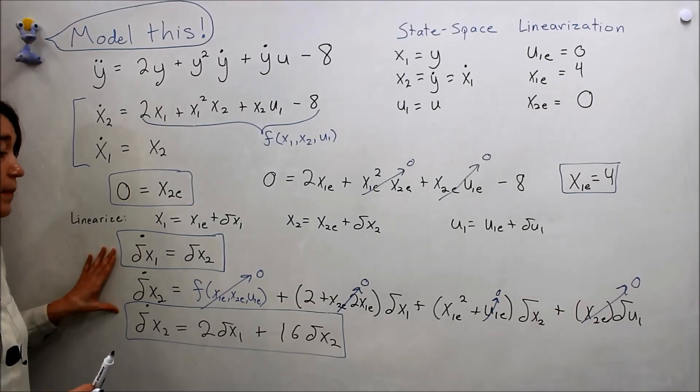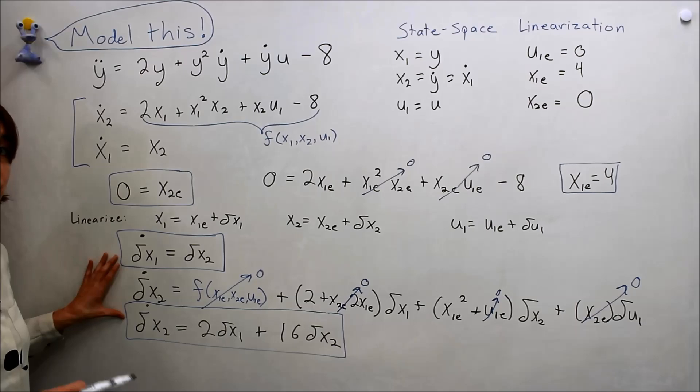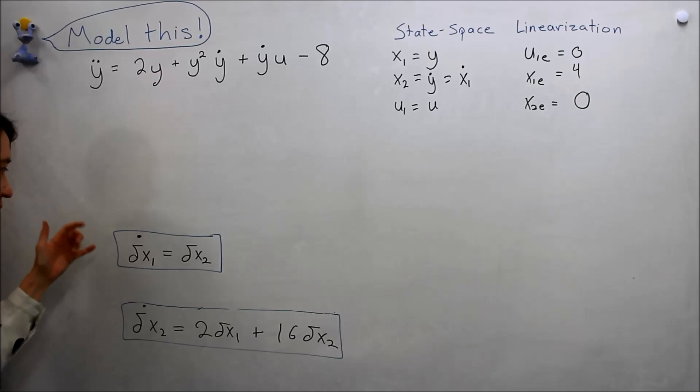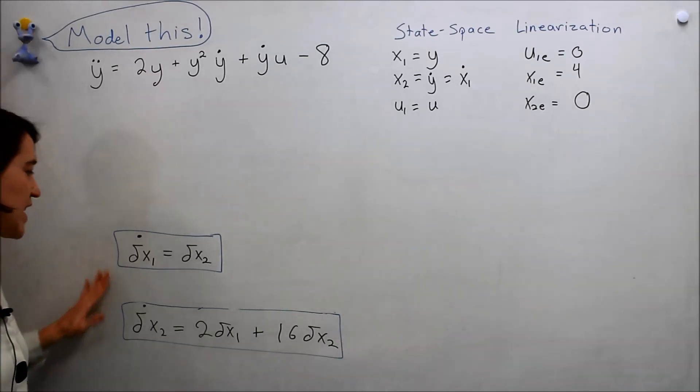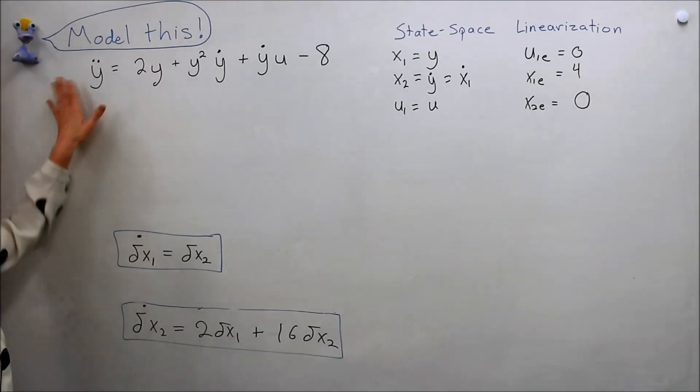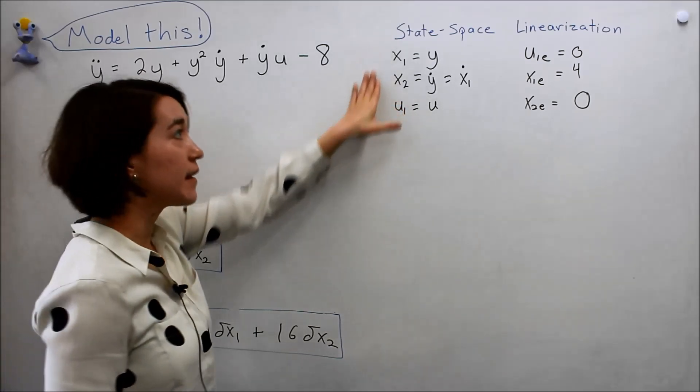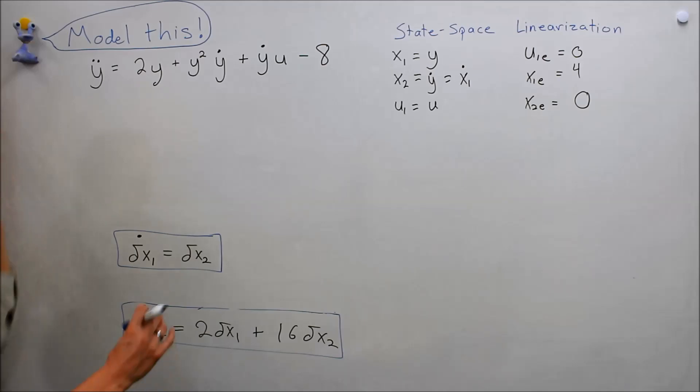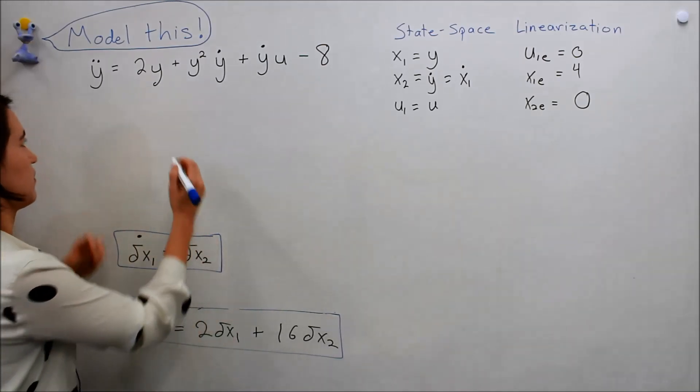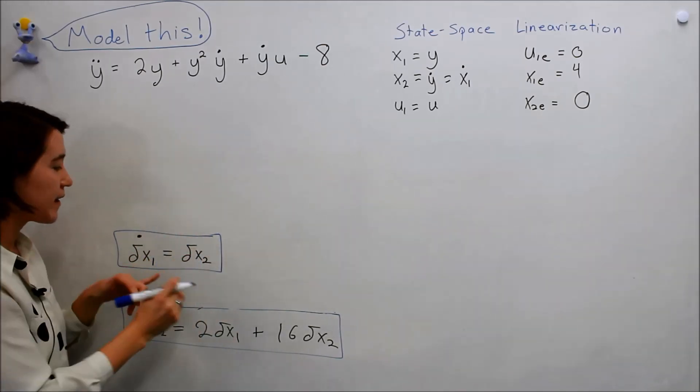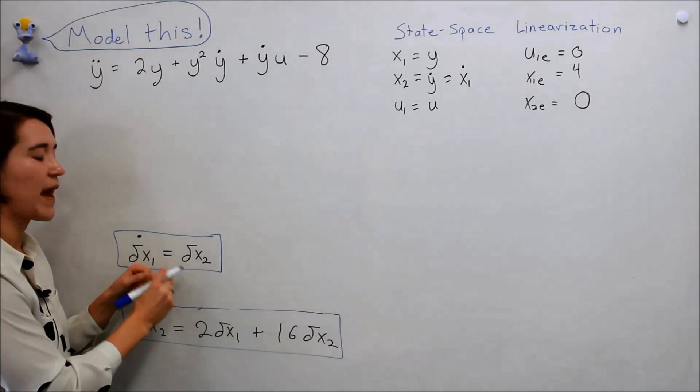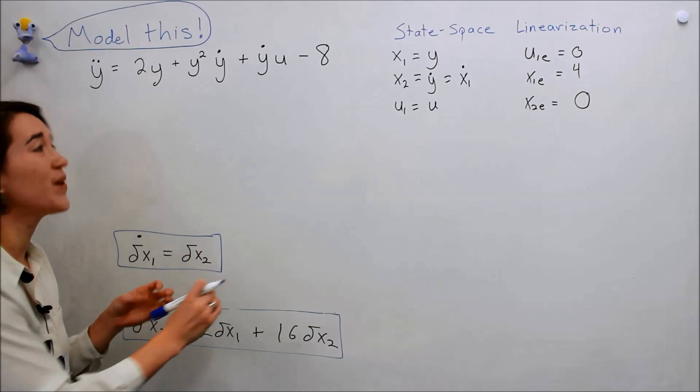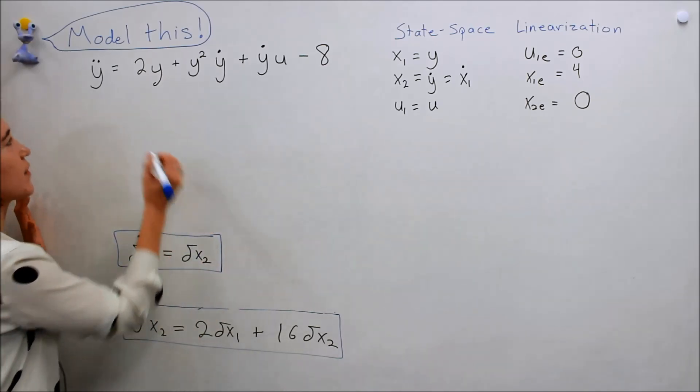I've cleared the board a little bit. This is where we left off. This is our linearized state space representation of this equation using these states and assuming this equilibrium point. So now I have to put it into the standard form. Let's remember what that is. In this case, we've actually changed to delta x1, x2, and delta u.